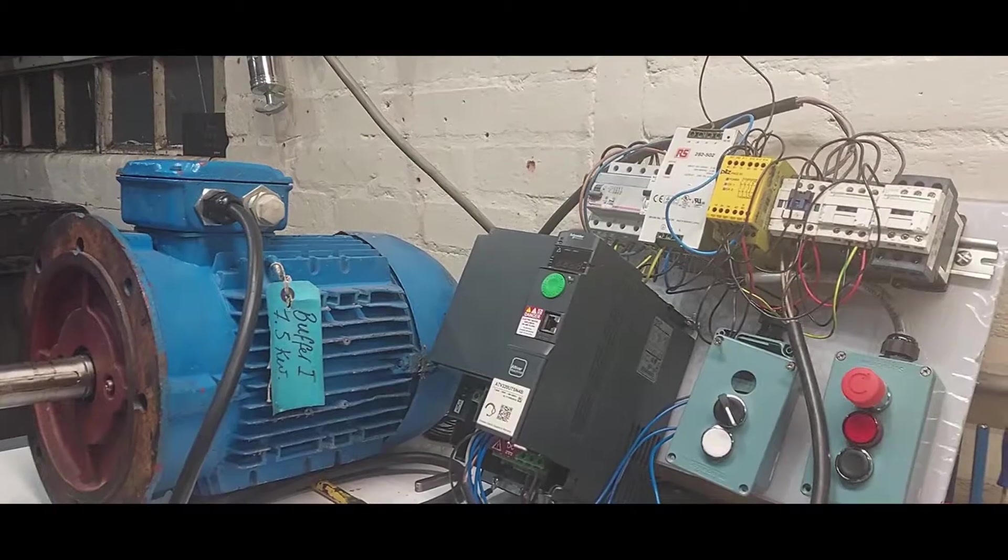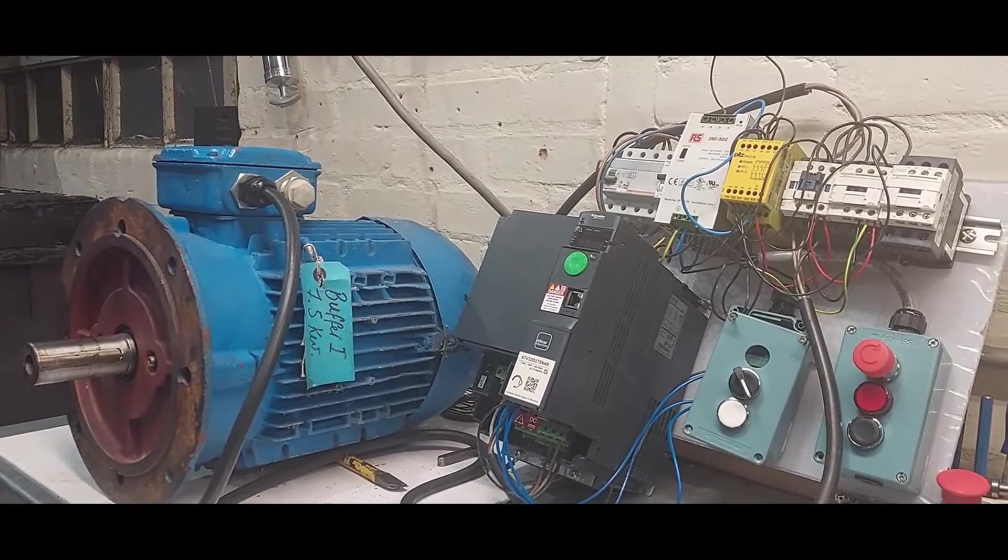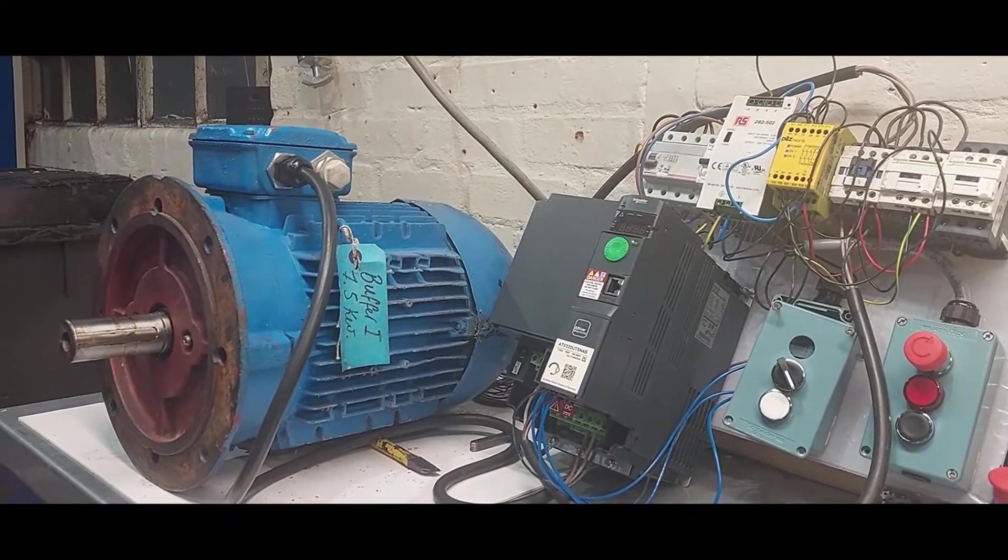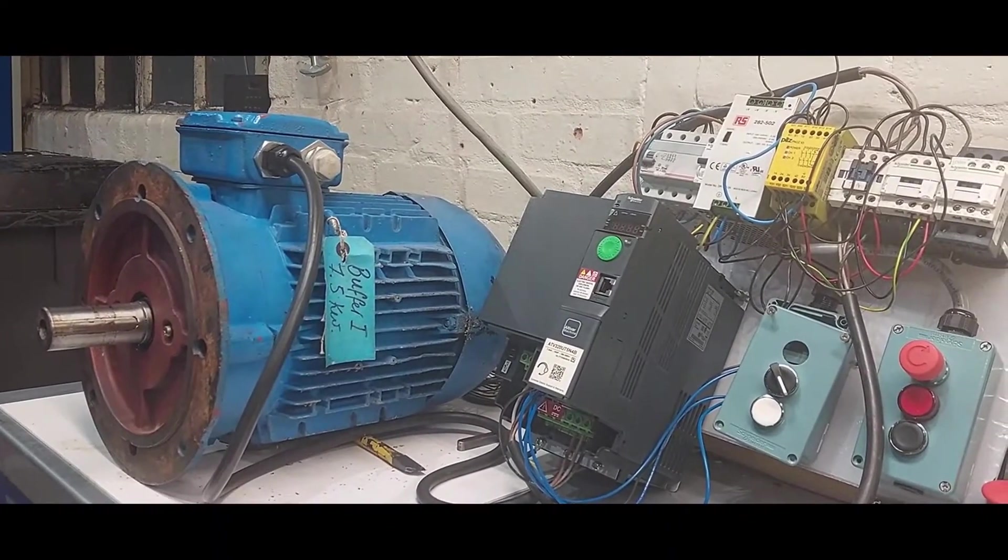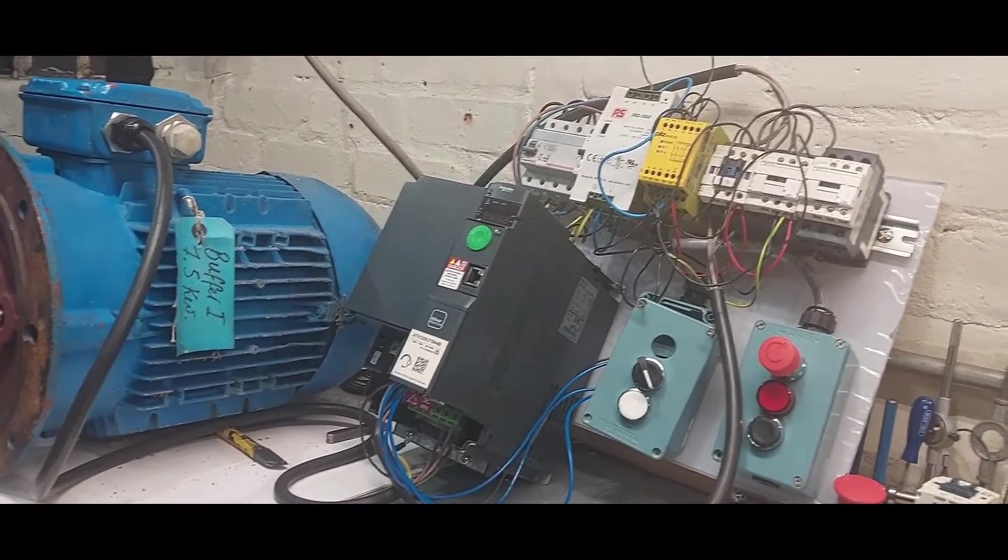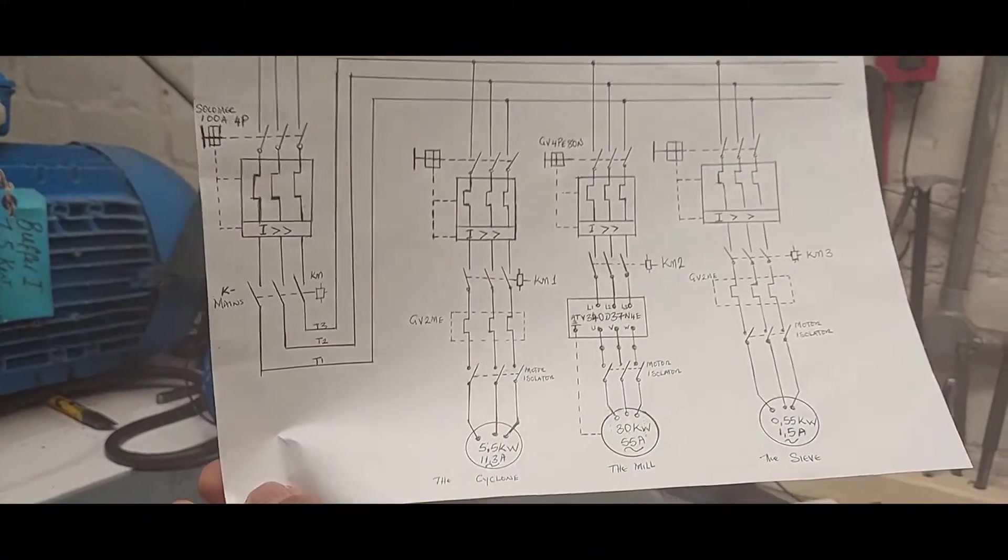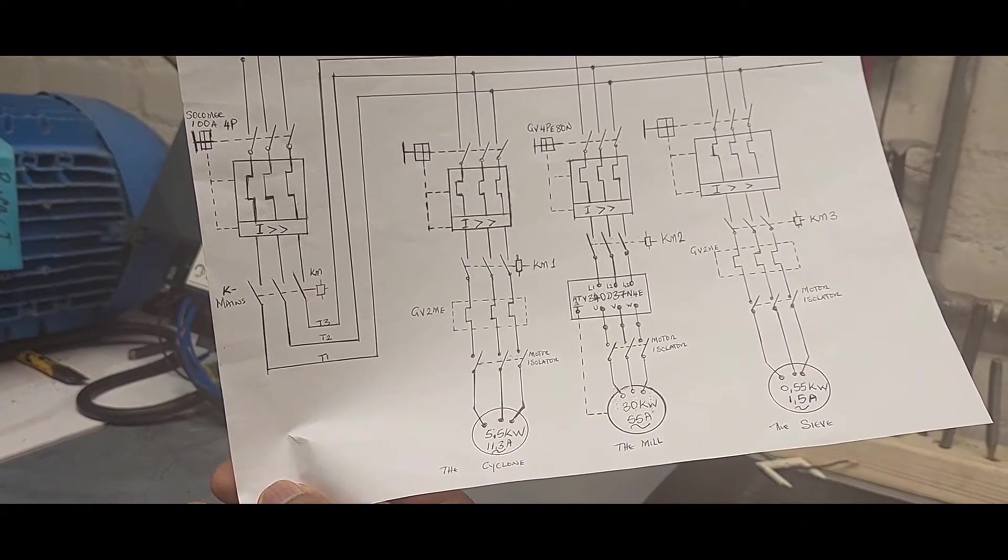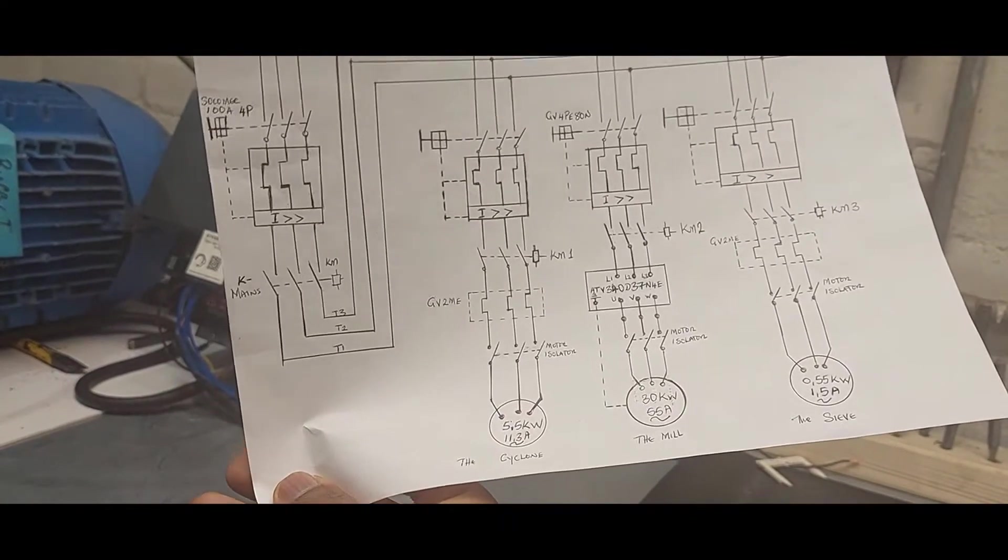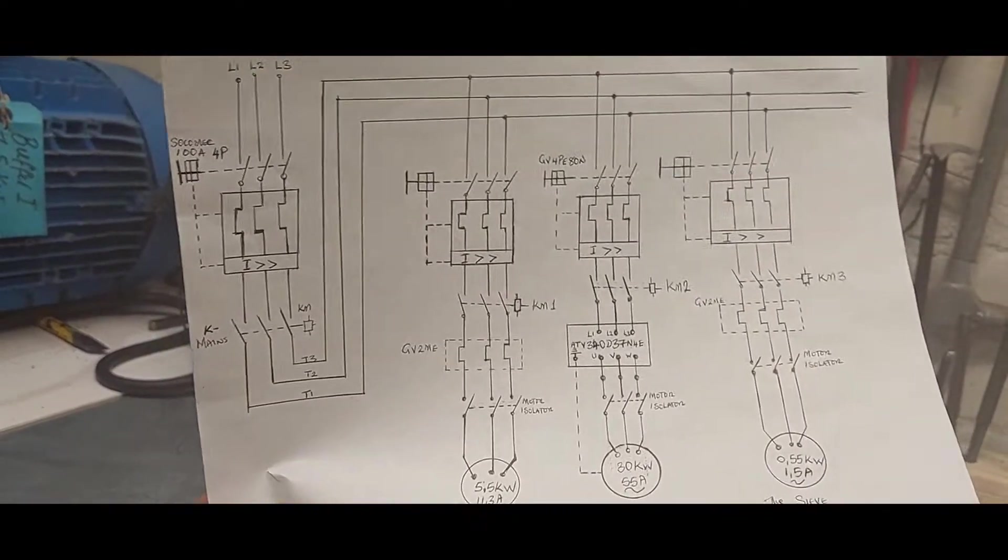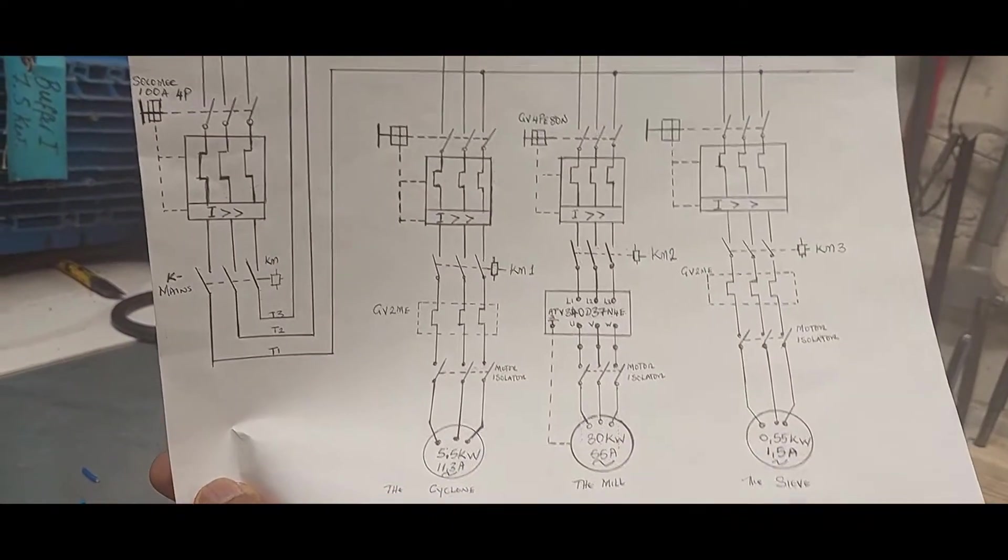To design a motor control circuit, we need to have a diagram. We need to have a power diagram. A power diagram consists of contactors, MCVs, motors, and all the components that control the power side of the motor, just like the one I'm showing you here.